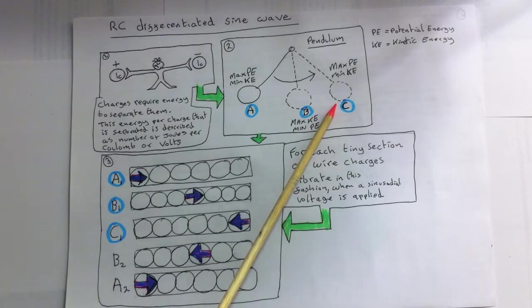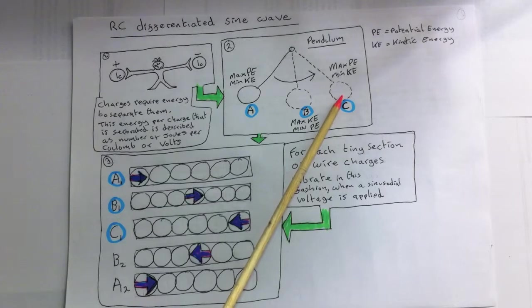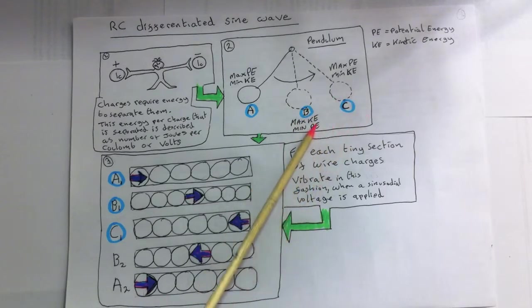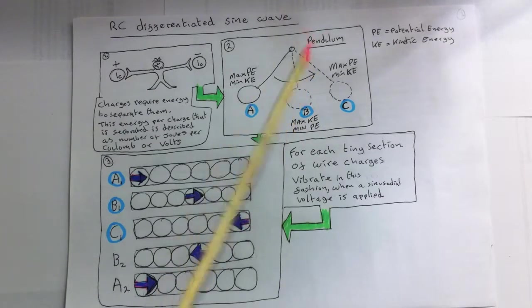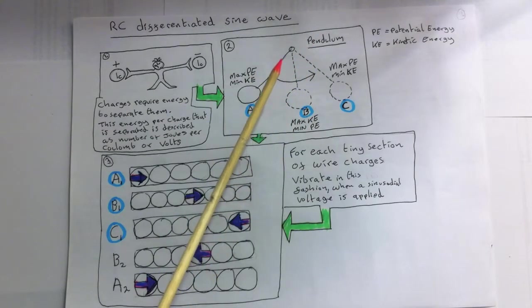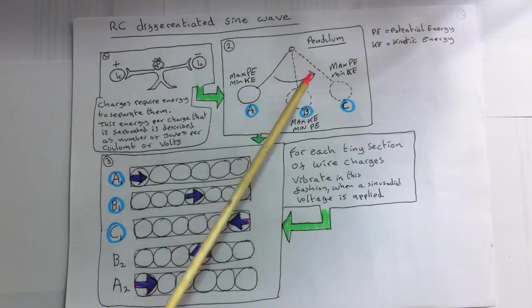So at that instant in time, it momentarily is at a stop. A moment later, it will begin to move back down again towards B. Now, in the opposite direction, this, then, is a sinusoidal system, and can be modeled as a sine wave.